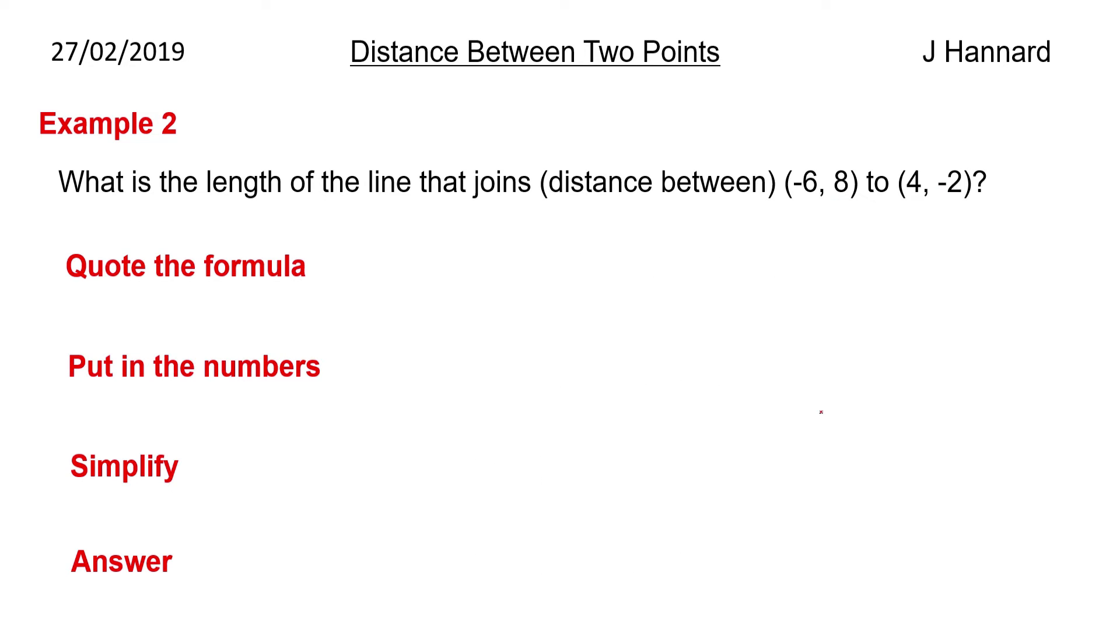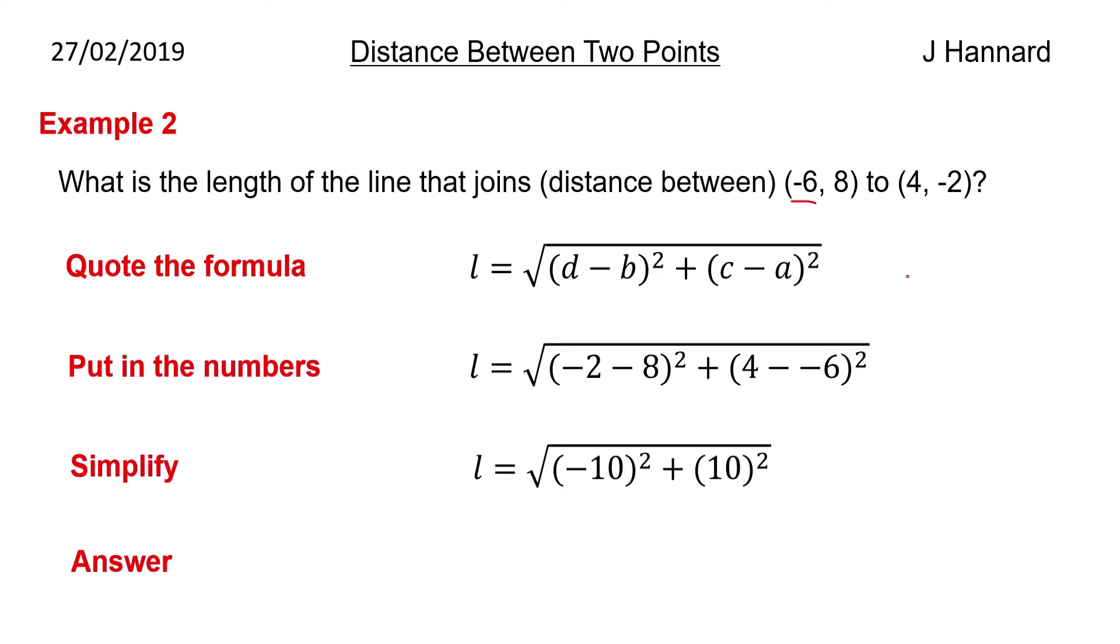Example two: What is the length of the line that joins (-6,8) to (4,-2)? Once again, we quote our formula, length is back take back squared added to front take front squared all square rooted. We then put in our numbers so minus two minus eight all squared plus four minus minus six, because remember there's a minus six here, so it's four minus minus six. Be careful of that double negative.